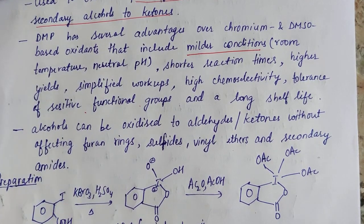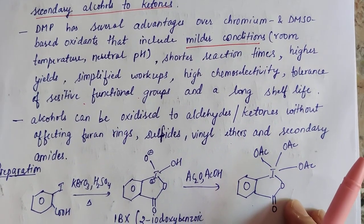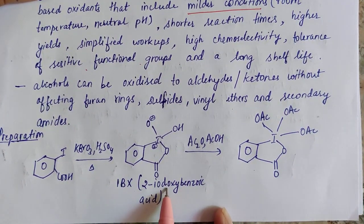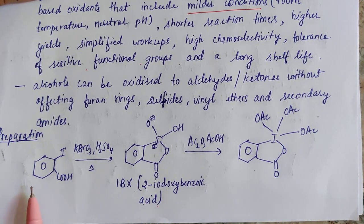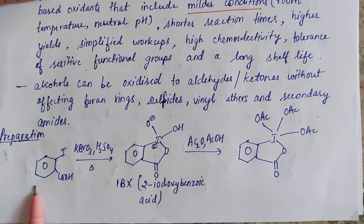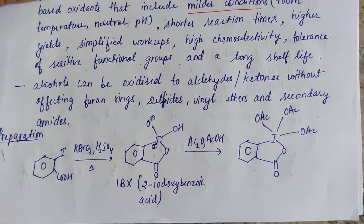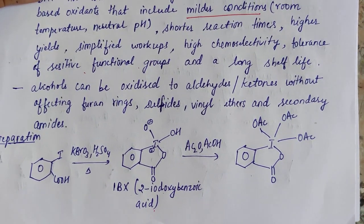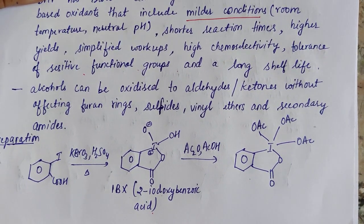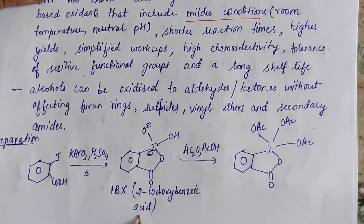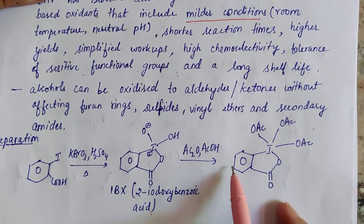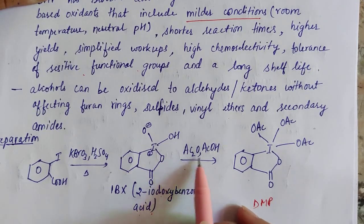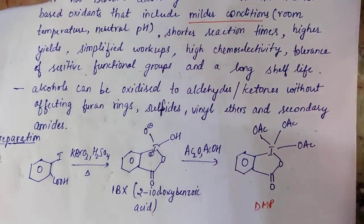Alcohols can be oxidized to aldehydes and ketones without affecting furan rings, sulfides, vinyl ethers, and secondary amides, making DMP a very unique oxidizing agent. DMP is basically prepared from another oxidizing agent, IBX — 2-iodoxybenzoic acid. Ortho-iodobenzoic acid, potassium bromate, and sulfuric acid — a mixture of all three is prepared and then heated to obtain IBX. This IBX on acylation gives us DMP. This acylation is carried out using acetic anhydride and acetic acid.